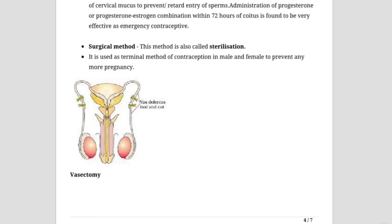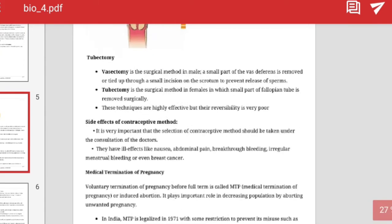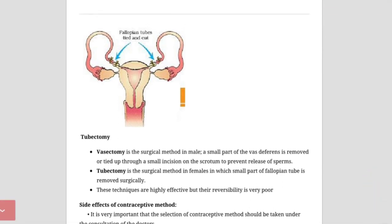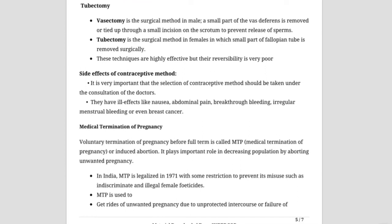In vasectomy, used in males, the vas deferens is cut and tied. During coitus, semen is released but it contains no sperm — only secretions of seminal vesicles, prostate gland, and Cowper's gland. The person feels normal but there is no chance of pregnancy. This is also called male nasbandi.